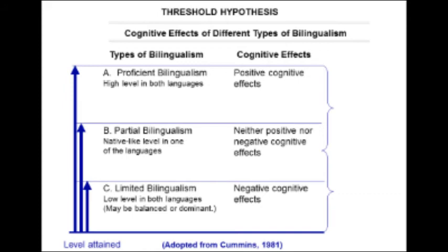There's another type of bilingual — Jim labeled this a limited bilingual. This is the person who has a little bit of one language and a little bit of another language. And tragically, we now know there are negative cognitive effects of being a limited bilingual.